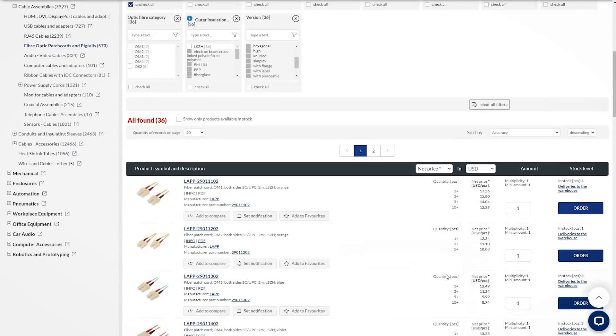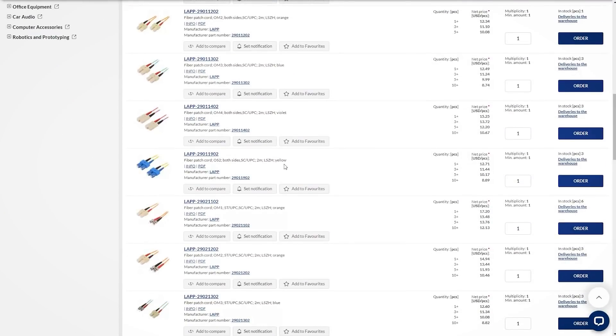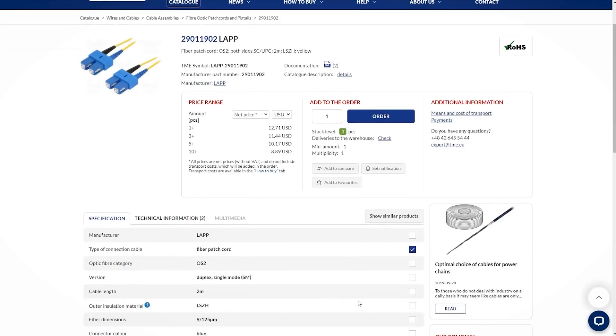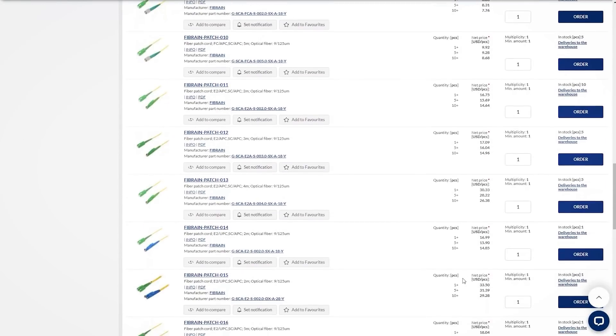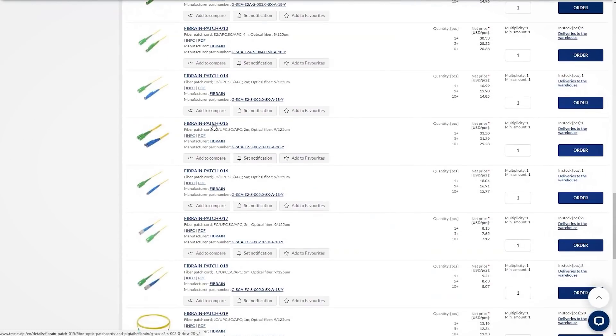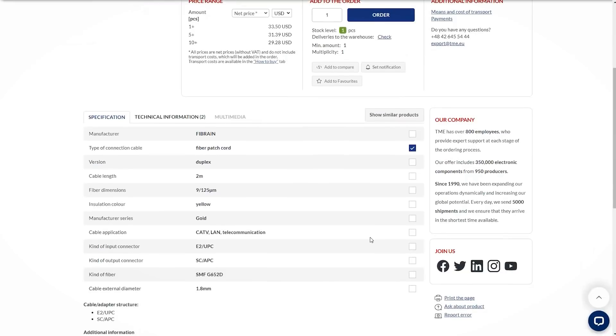In our offer, you will also find patch cords and pigtails. The Lab offer includes both, in length of 2 meters. Fibrant patch cords can be found from a half a meter up to 30 meters, while Fibrant pigtails range from 1 to 2 meters.